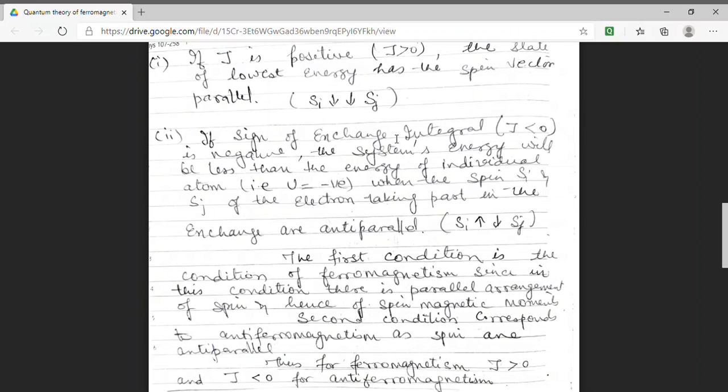So, from here, we can conclude that ferromagnetism is the condition in which exchange integral is positive. And in anti-ferromagnetism case, J must be less than 0.